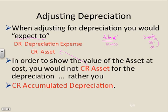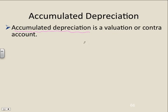Accumulated depreciation is where we keep track of all the depreciation over the years. If we expense $100 this year, accumulated depreciation is $100. If we expense $100 the next year, now accumulated depreciation is $200 — it just keeps accumulating. Accumulated depreciation is called a valuation account or a contra account. We already know about contra accounts from HST recoverable being a contra liability. Accumulated depreciation is a contra asset, which means it has a credit balance, because assets have debit balances and contra accounts have the opposite.